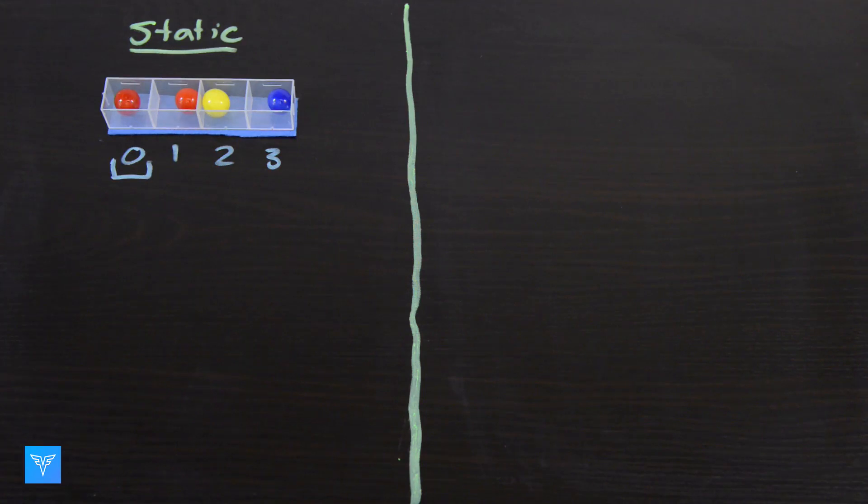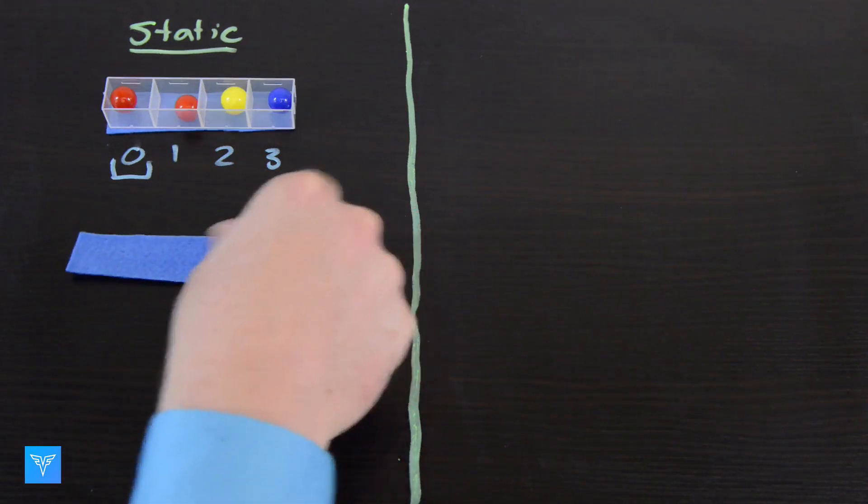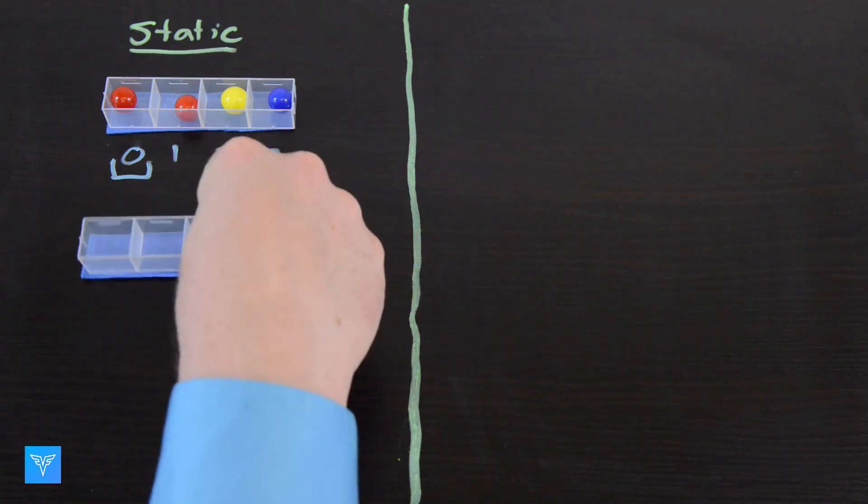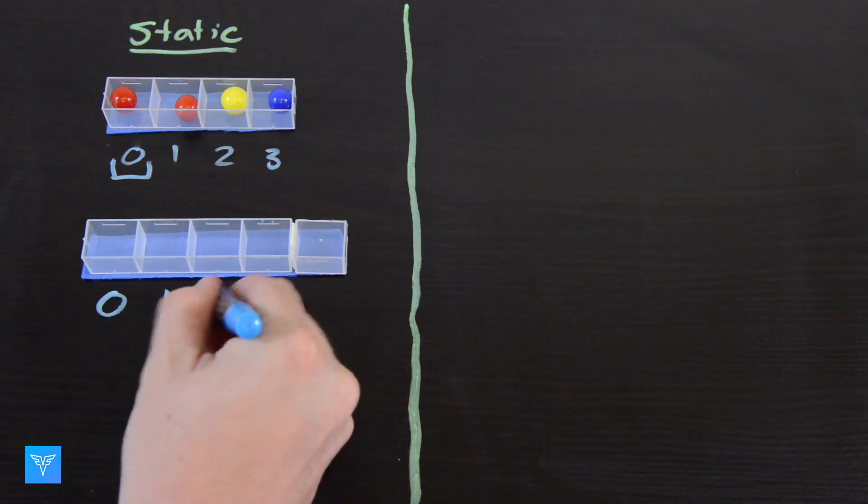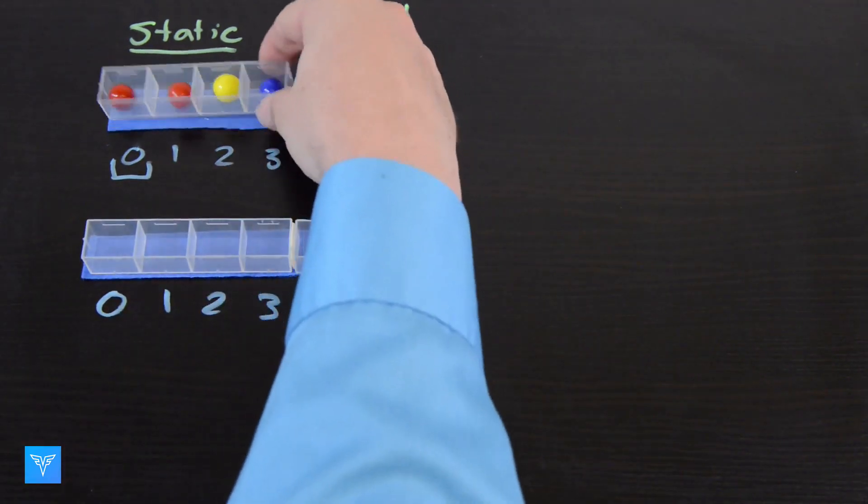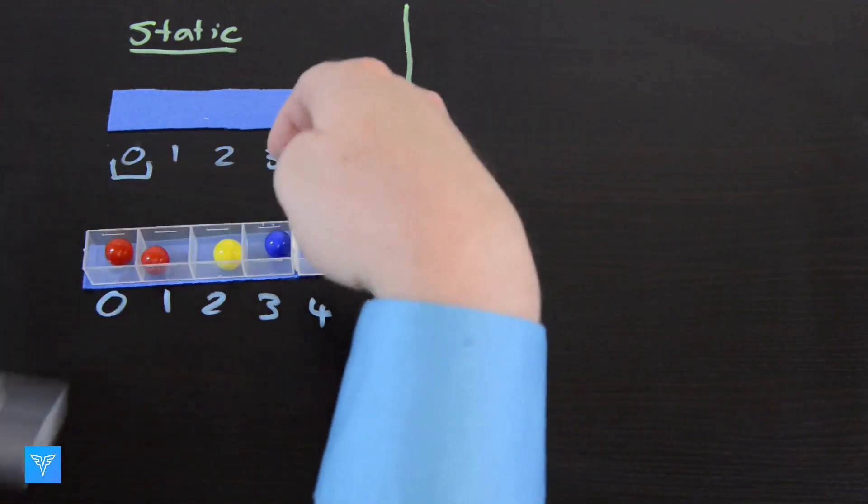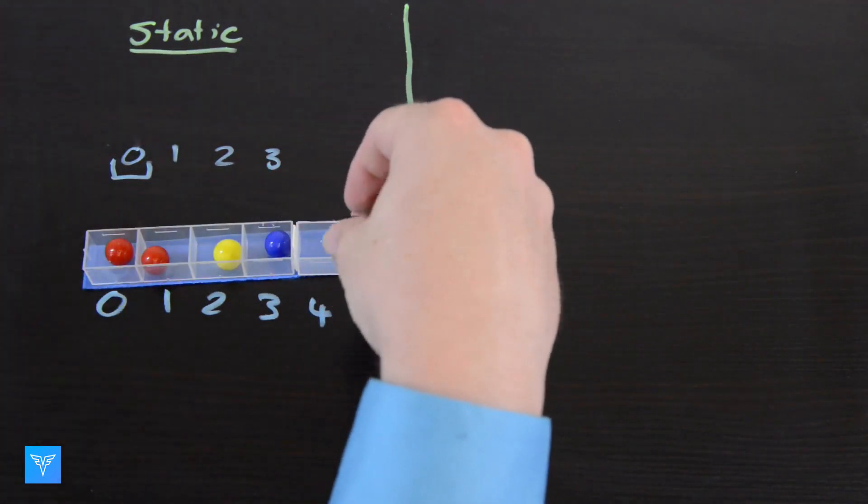Because of this, we cannot directly add an element to a static array. We can achieve the same effect by making space for a larger array, creating the new array, copying elements over from the old array, and then deleting the old array.